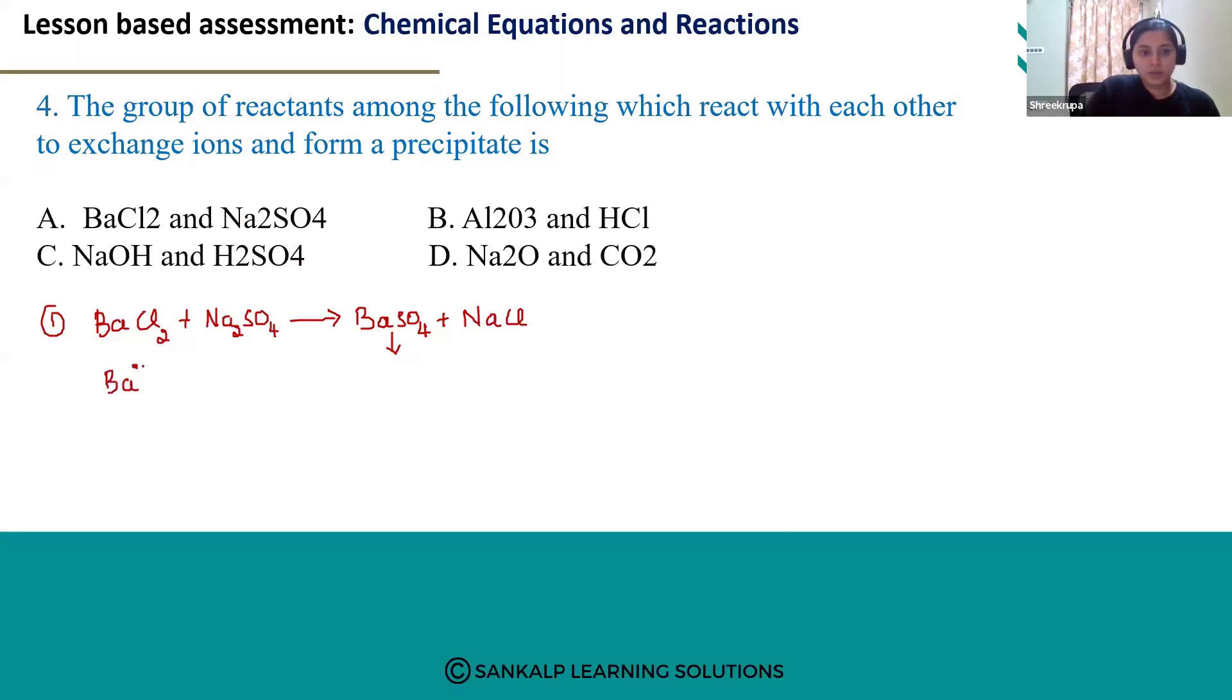Here Ba2+ and Cl- ions will be formed from this compound. And when we observe this compound, 2 Na+ ions and SO42- ions will be formed from this compound. And these ions get exchanged to form BaSO4 and NaCl.